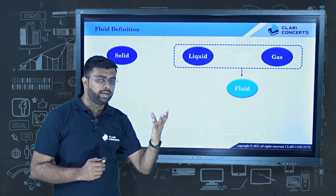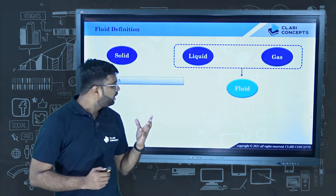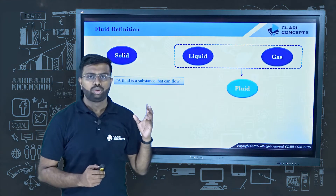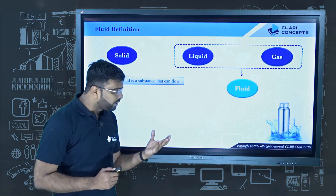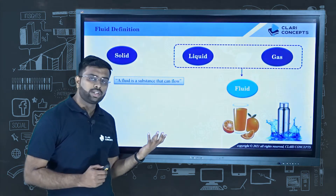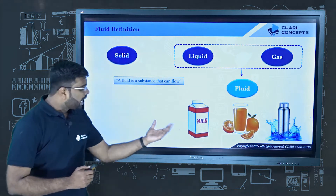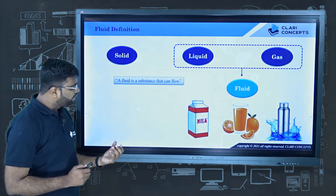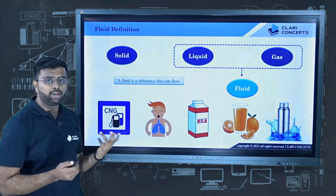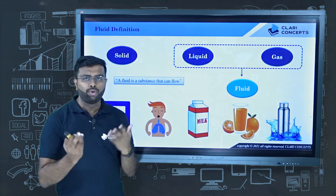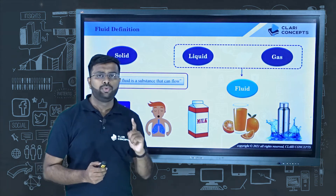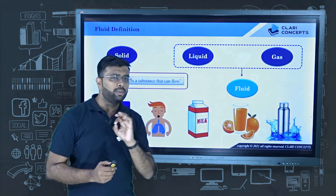If I ask someone what is fluid, you will say that fluid is a substance that can flow. For example, water can flow, juice can flow, milk can flow, air can flow, CNG, petrol, diesel can flow. But the definition of fluid as a substance that can flow is not the complete one.